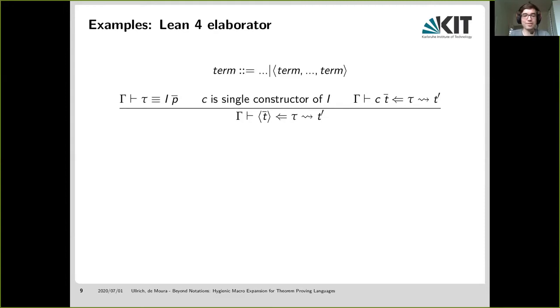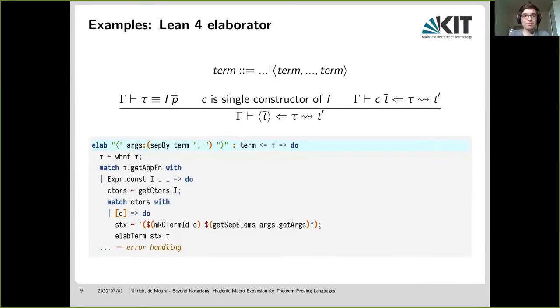So, okay, let's try to implement that in Lean 4. So we start with the elab command and define the syntax of the anonymous constructor. And after that, we capture after this left arrow, we capture the expected type in the variable tau. And after the right-hand arrow, we give our implementation as usual. So the first thing we do is we reduce tau to its weak-head-normal form. And then we check its function head if it's a constant i. After that, we get the constructors of i and check if there is a single constructor c. And finally, we assemble a new syntax tree from this information and recursively elaborate that.